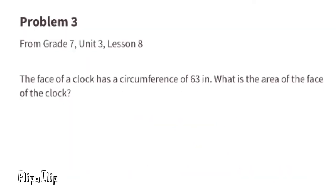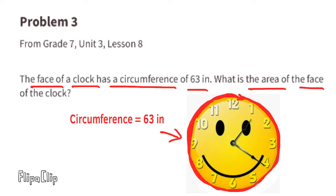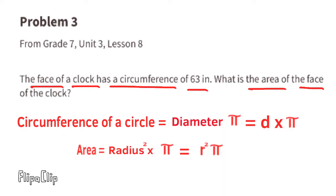Problem number three, from seventh grade Unit 3, Lesson 8: the face of a clock has a circumference of 63 inches. What is the area of the face of the clock? Remember, diameter times pi equals the circumference. To find the area of a circle we need to know its radius, so first let's figure out the diameter.